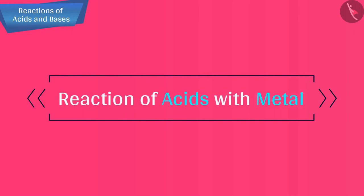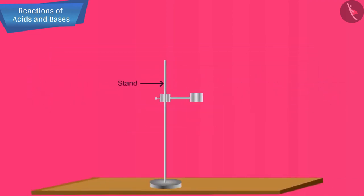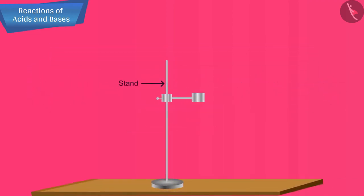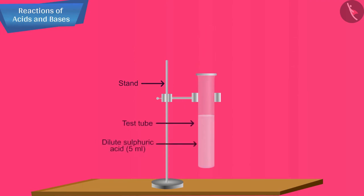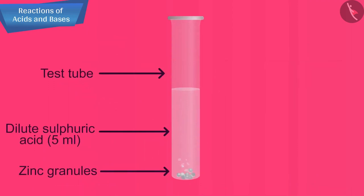Let us begin with the first reaction: the reaction of acids with metals. Let us see how a metal reacts with acids with the help of an activity. Take about 5 ml of dilute sulphuric acid in a test tube and add a few pieces of zinc granules to it. You will observe the formation of gas bubbles on the surface of zinc granules.